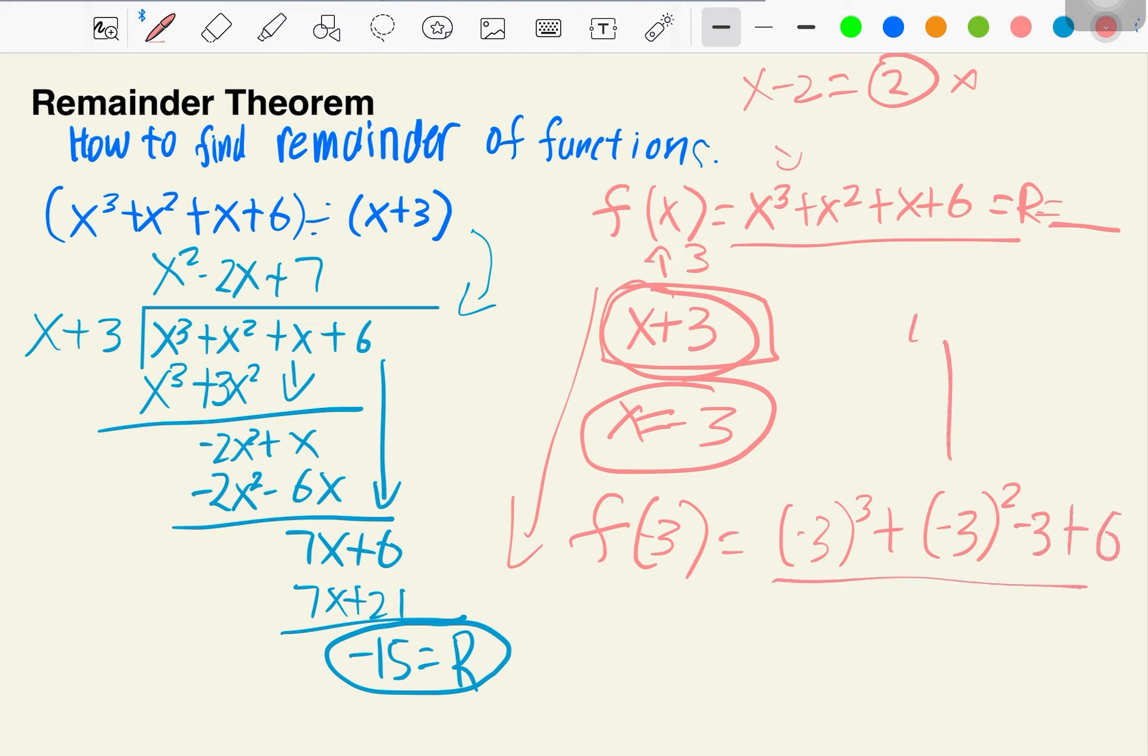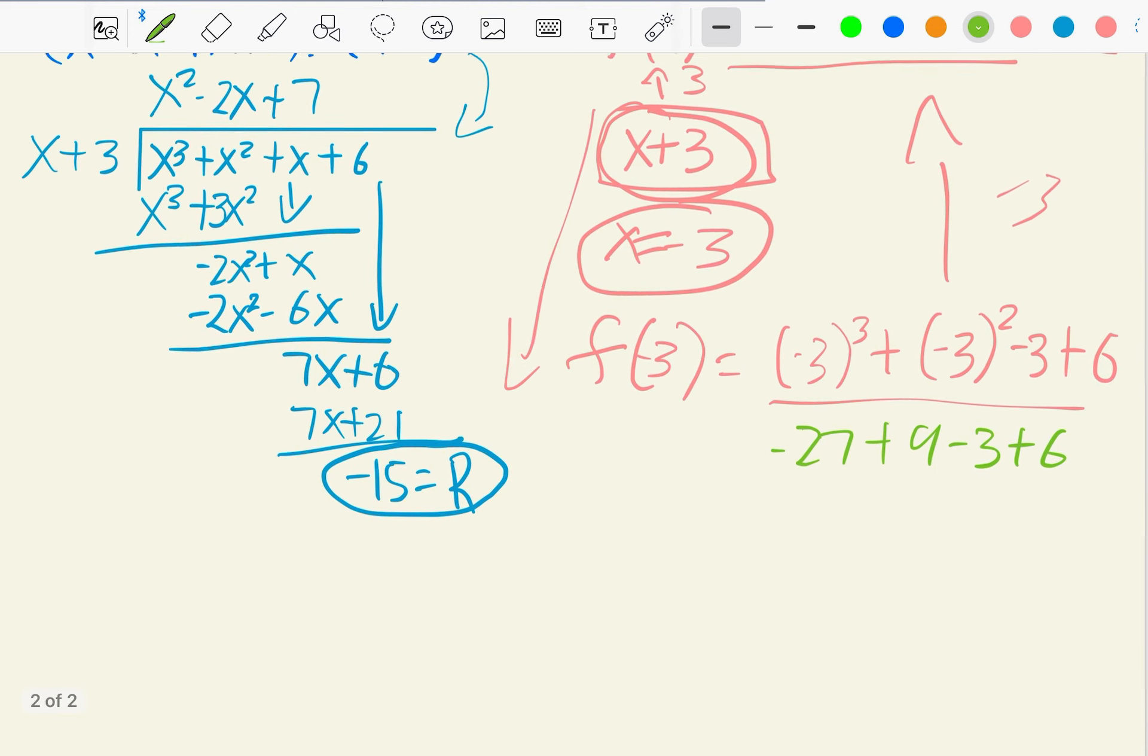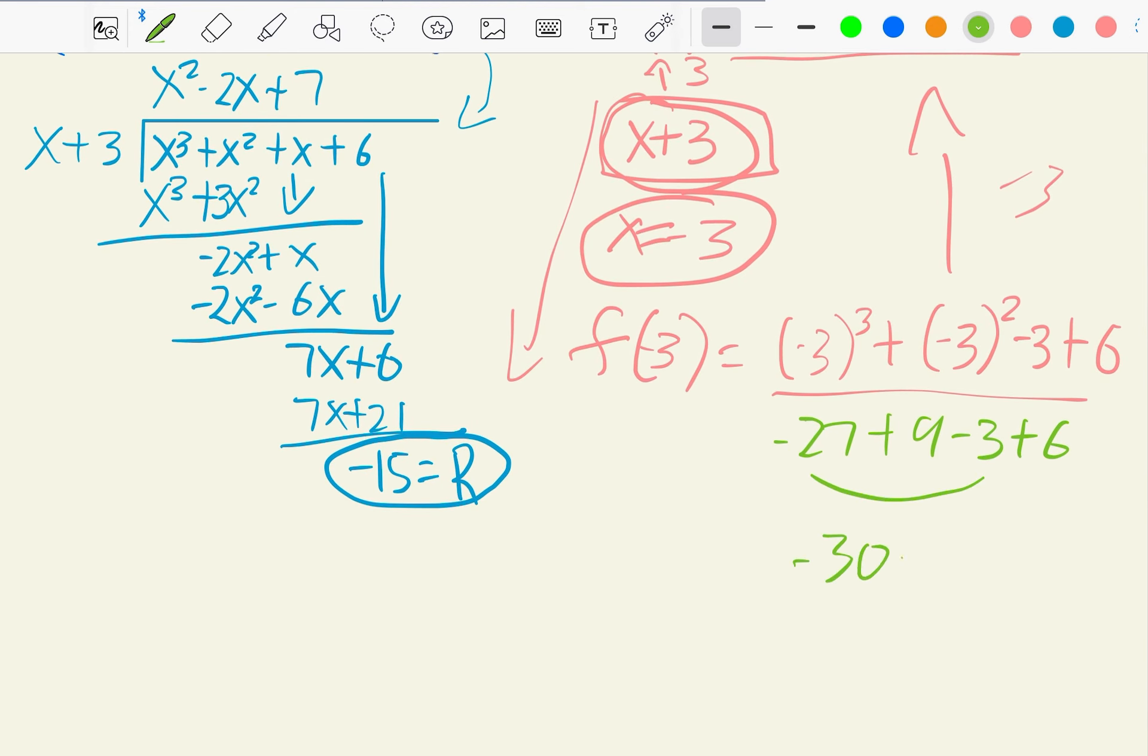So this is basically this, but plugged in with negative 3. Right now, negative 27 plus 9, negative 3 plus 6. Minus negative 30 plus 15. The answer you get is negative 15.